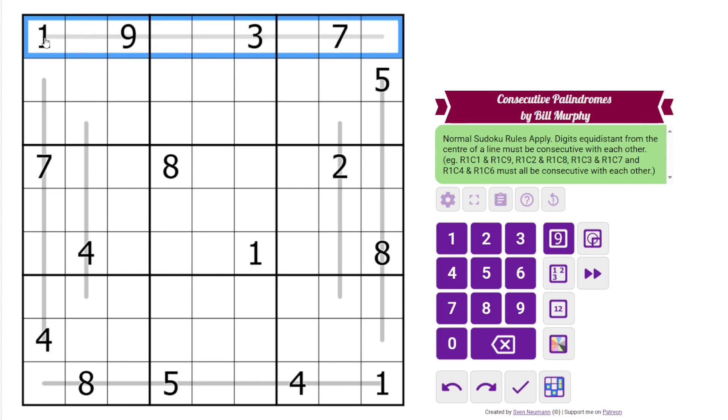Let's start with this line. The only digit consecutive with 1 is 2. The only digits consecutive with 3 are 2 and 4, but we have a 2 in the row, so this is a 4. The only digit consecutive with 9 is 8. And now the only digit consecutive with 7 that's not 8 is 6.